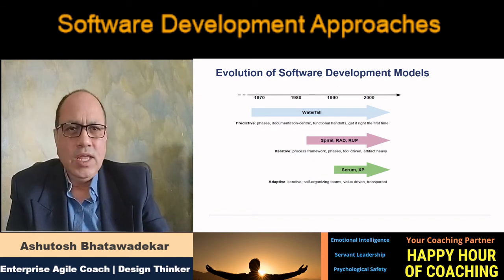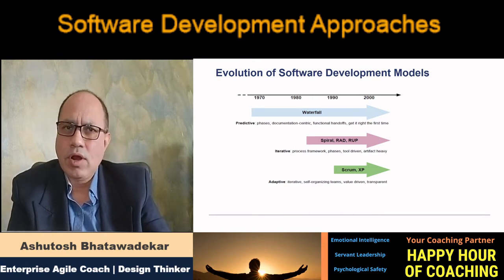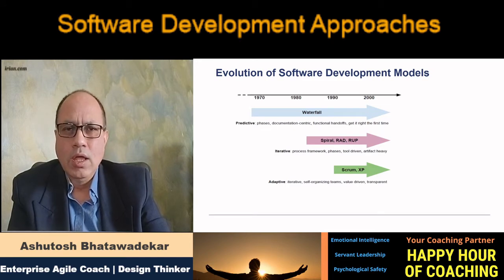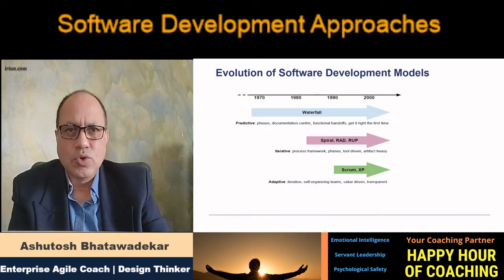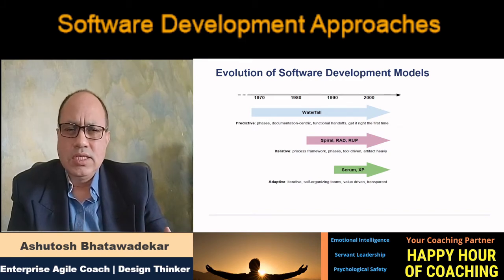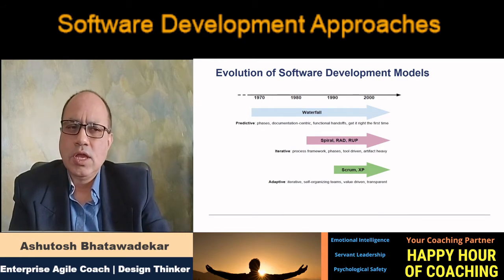In the 70s and 80s, when the software industry was pretty nascent, they followed a traditional or SDLC model. The Agile Manifesto came into existence in 2001, but between that era there were many organizations using other software development approaches that I'm going to talk about today.